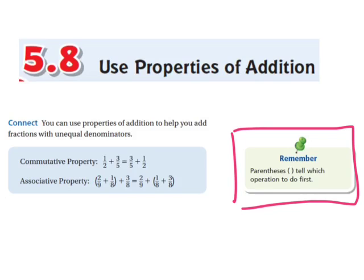The associative property - we have two ninths plus one eighth plus three eighths, and on the other side of the equal sign, we have two ninths plus one eighth plus three eighths again. The numbers are in the same order. The only difference is that here, the parentheses are around the two ninths plus one eighth, and here, the parentheses are around the one eighth plus three eighths.